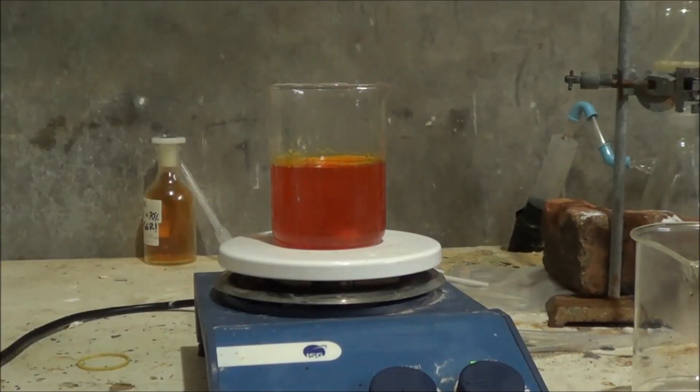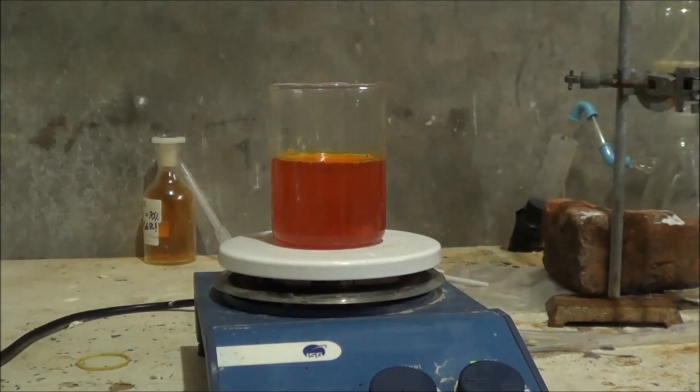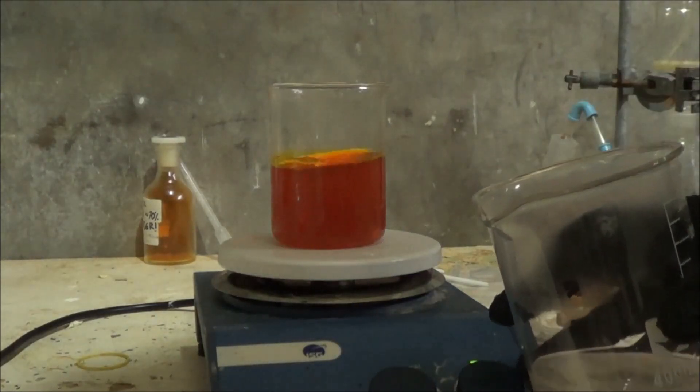Still can't decide if I like that extra light in there or not, but what we're going to do now is we're going to add some ammonium sulfate, and that'll precipitate our calcium sulfate and leave us behind ammonium dichromate, which is exactly what we want.